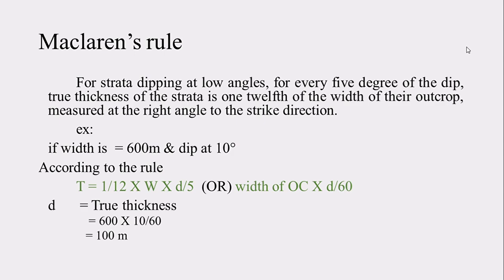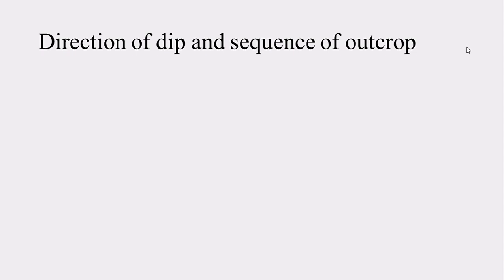McLaren's Rule deals with the relation between the width of the outcrop and true thickness. This question may come in a two-mark or five-mark question. The next heading is direction of dip and the sequence of outcrop.